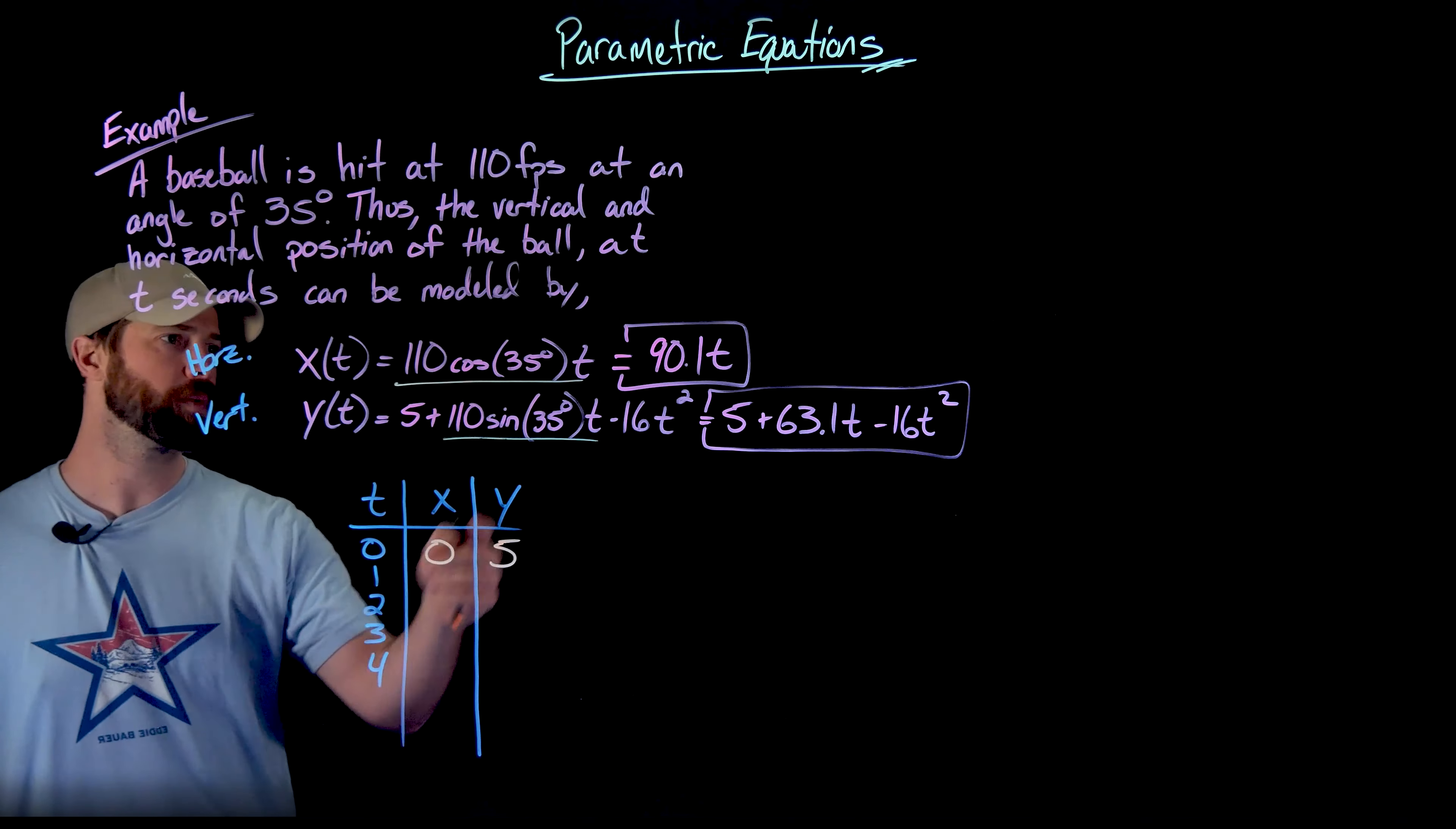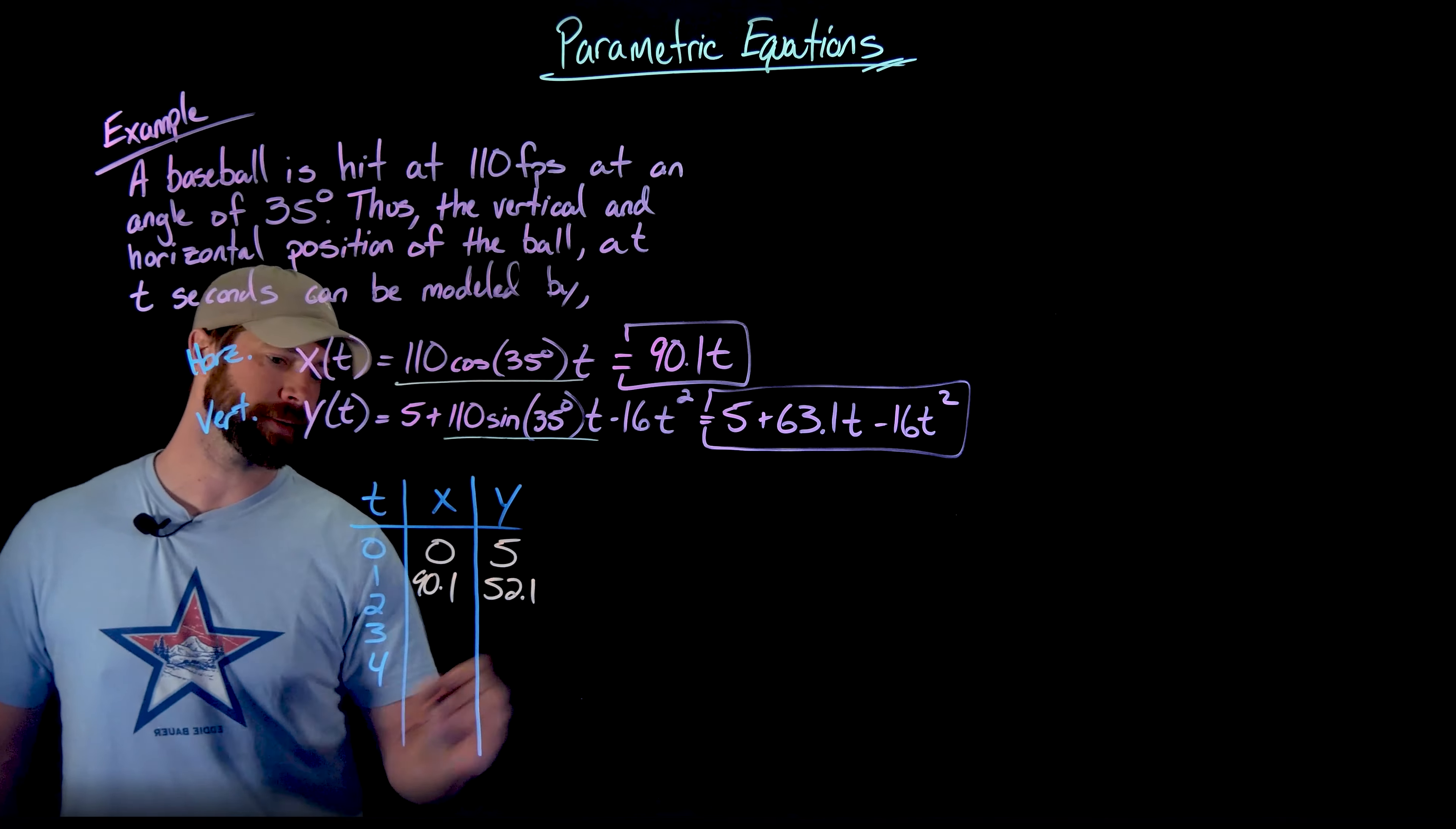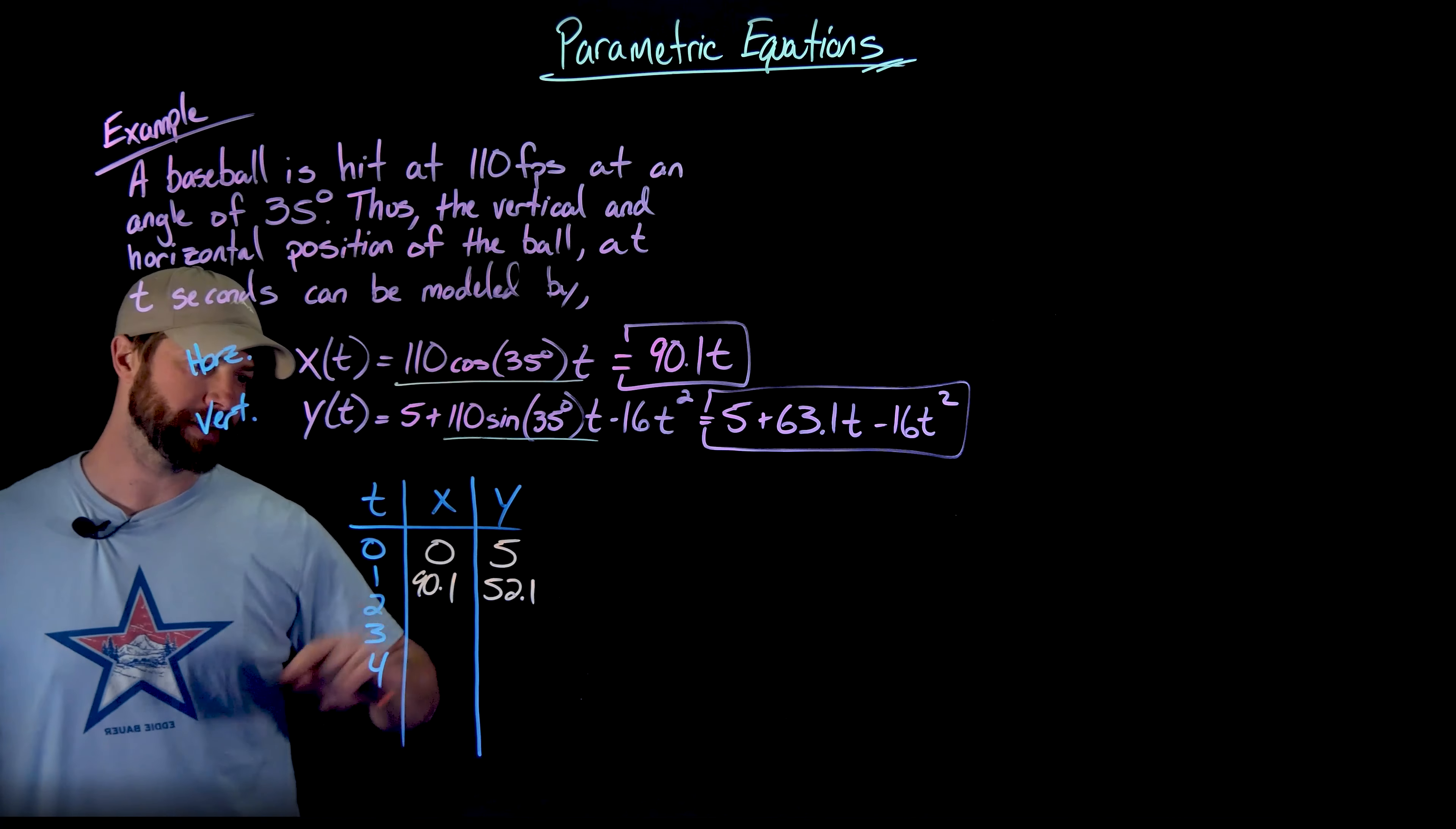And this is what we should expect if we understand these equations is that at time zero, it hasn't traveled horizontally at all, but it starts at its starting point at five feet off the ground. And then finishing off this table, if I plug a one in, what I get for X is 90.1. And for Y, I get 52.1. And now I'll just finish up this table. Again, all I'm doing is plugging these values for T into both of them and plotting those values for X and Y in the same row.